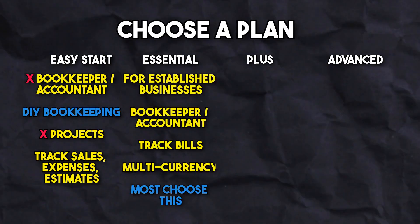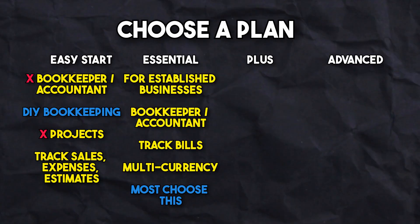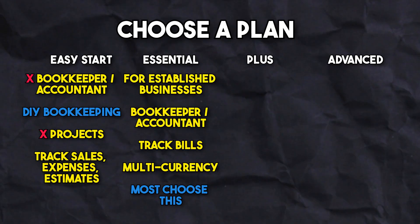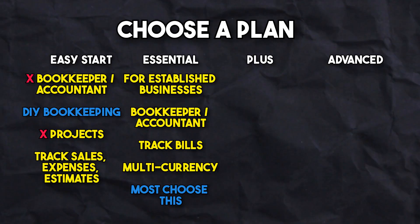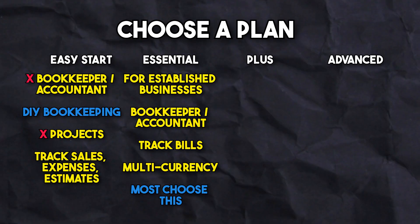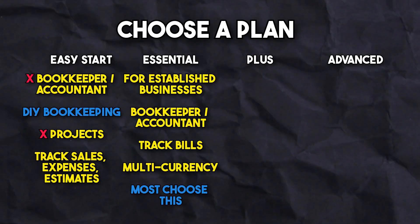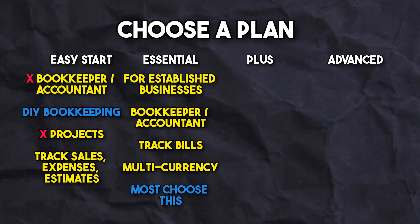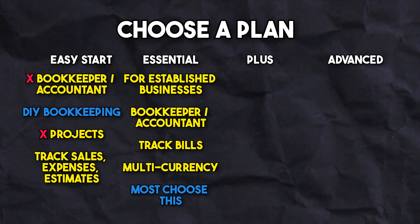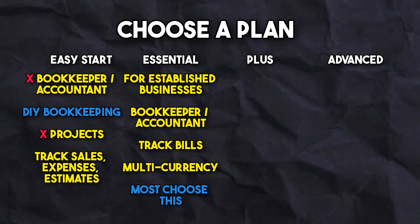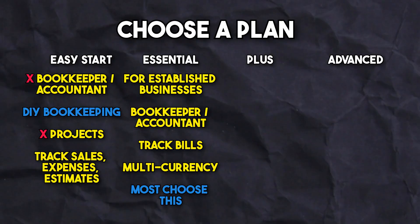and even estimates. The Essential plan is a much better plan for those who now have a good footing on their business, are starting to make a little bit of sales, and are either working on your business part-time or full-time. It allows you to work with accountants and bookkeepers to help you with your bookkeeping, and it is generally sufficient for most cleaning business owners. It includes everything in the Easy Start plan, plus the ability to use multi-currency and manage bills.